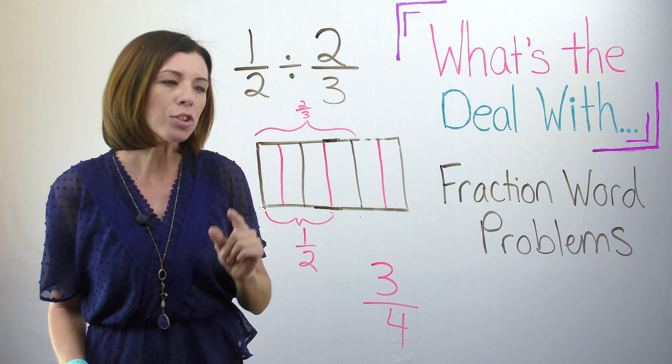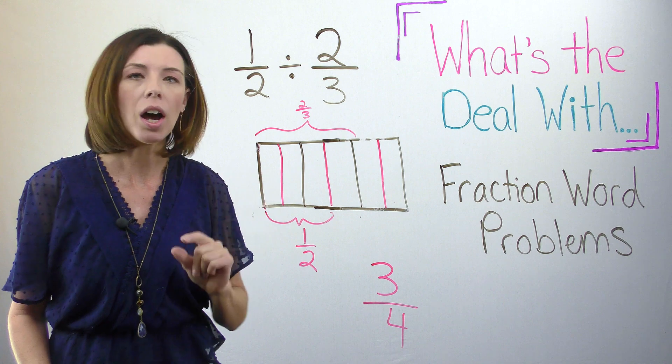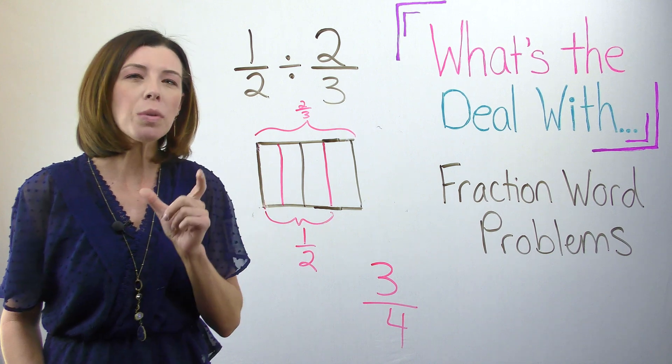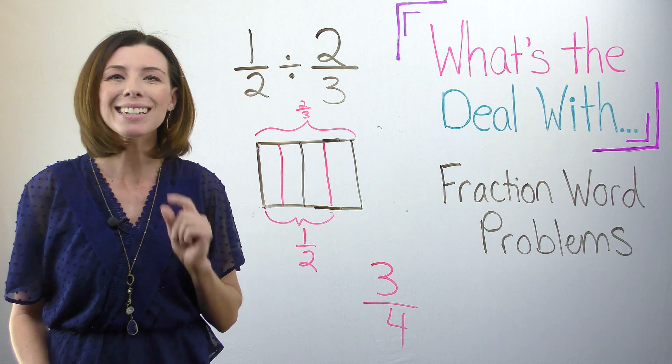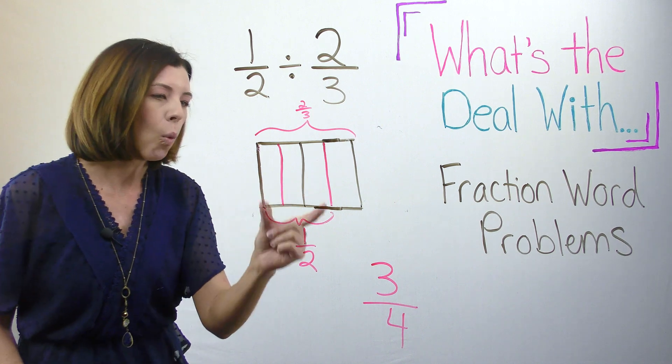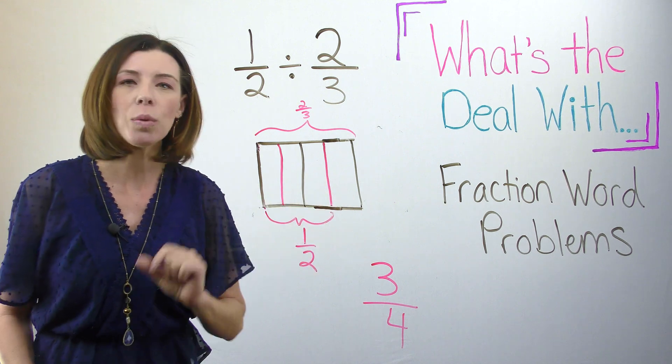So then my next question is, okay, fine. If it's not one whole copy, then what part of the recipe can I make? Because remember, the recipe calls for two thirds. My unit has now changed. So I'm saying, what part of this two thirds, which by the way is now my whole, is this one half?